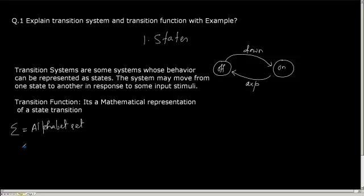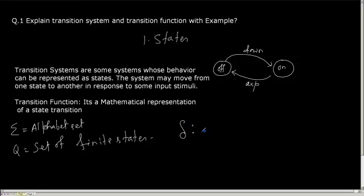We have an alphabet set which is sigma, and the system has a set of finite states represented by Q. The transition function, represented by delta, is a mapping of Q cross sigma. Depending on the kind of automata or transition system, this transition function varies. For a deterministic finite automaton, the transition function is a mapping from a set of states and an input alphabet set to a set of states Q.